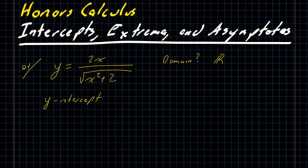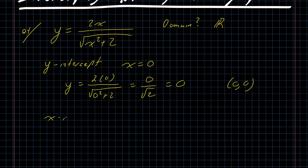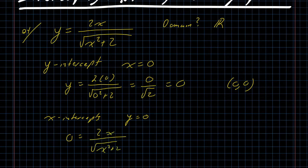The y-intercept is the easier of the intercepts to find. That's the point where x equals 0, and in this case it gives us y equals 2 times 0 over the square root of 0 squared plus 2, which is 0 over the square root of 2, which is just 0. So the y-intercept is the point (0, 0), which is also an x-intercept. Setting y equal to 0 gives us 0 equals 2x over the square root of x squared plus 2, meaning 2x equals 0, so x equals 0. There is exactly one intercept: the point (0, 0).